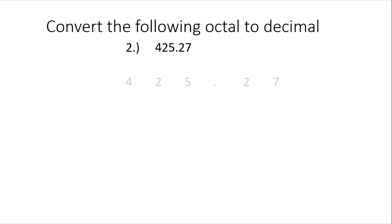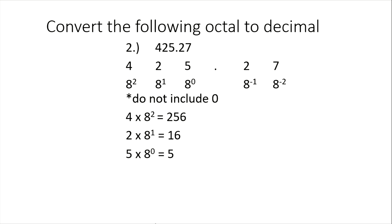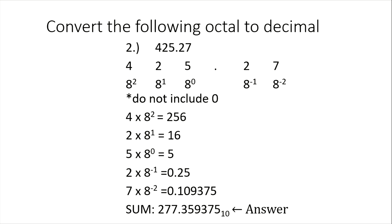What if we have a decimal point? For 425.27 base 8, starting at the one's digit place we have 8 raised to 0, 8 raised to 1, 8 raised to 2. To the right of the decimal point, we have negative exponents. We multiply: 4 times 8 raised to 2, plus 2 times 8 raised to 1, plus 5 times 8 raised to 0, plus 2 times 8 raised to negative 1, plus 7 times 8 raised to negative 2. Adding the results gives the decimal value of the given octal number.